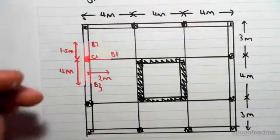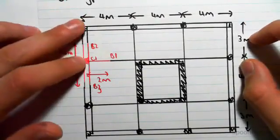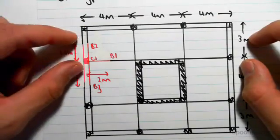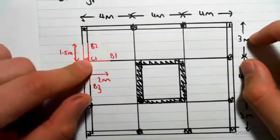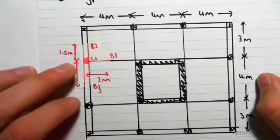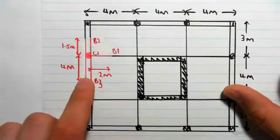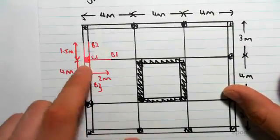The length of this beam was 3 meters, there's a column there and a column there, so half of that length, half the length of B2 will go to this column, so 1.5 meters. This length of beam is 4 meters, it's supported by a column and a column, so half of its loading will go into that column.